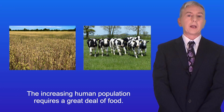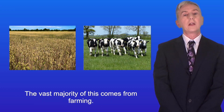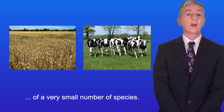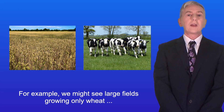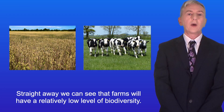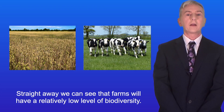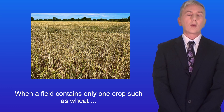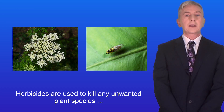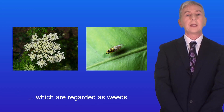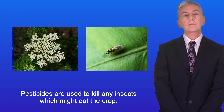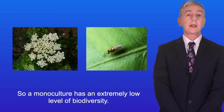The increasing human population requires a great deal of food and the vast majority of this comes from farming. Farms are designed to support a very large population of a very small number of species. For example, we might see large fields growing only wheat or containing a large number of cows, so farms will have a relatively low level of biodiversity. When a field contains only one crop such as wheat, scientists call this a monoculture. Herbicides are used to kill any unwanted plant species which are regarded as weeds, and pesticides are used to kill any insects which might eat the crop. So a monoculture has an extremely low level of biodiversity.